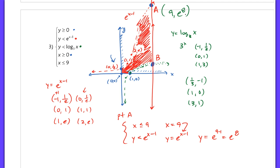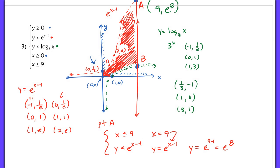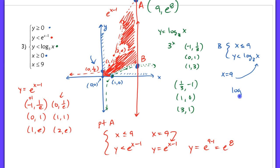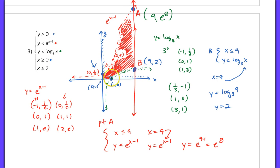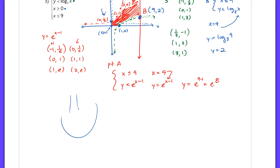For point B, I use the system x equals 9 and y equals log base 3 of x. Since x equals 9, I substitute to get y equals log base 3 of 9, which is 2, because 3 squared is 9. So coordinate B is (9, 2). The graph doesn't look perfectly neat, but all you need to do is find all corner points, show the feasible region, show your solutions, and you're done. That's the end of the lesson — tomorrow we'll go over some practice problems. Nice job.